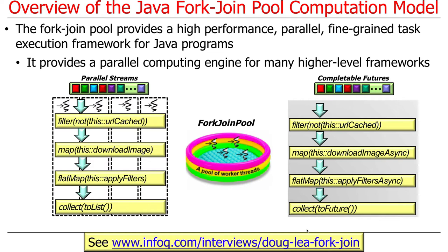The ForkJoin Framework can either be programmed in its own right — you can program to it directly, as you'll be doing in assignment 4A. It's also used as the basis for parallel streams and completable futures by default. Lots of other things use it as well, like Kotlin and any JVM language that does parallel computing. The intent was to provide a reusable infrastructure that lots of other toolkits could apply.